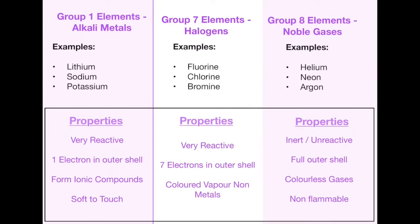And finally the group 8 elements or the noble gases contain elements such as helium, neon and argon. The group 8 elements have a full outer shell of electrons, so this means they are inert or unreactive, so they don't react with anything. They are colourless gases and because they don't react they are also non-flammable. So again, very important that you understand a bit about each of these three because they're very commonly asked in exam questions.